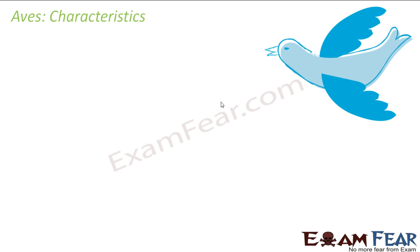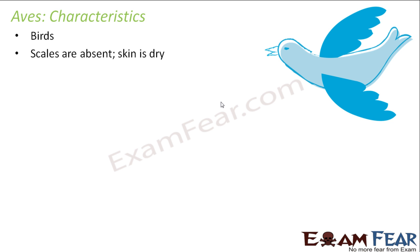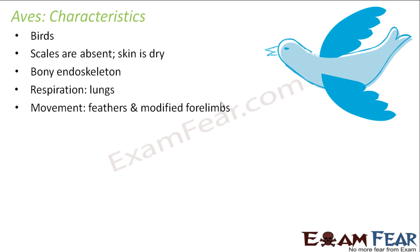Let us look at the next category — Aves, that is birds. The limbs are present but in a modified form as feathers. Scales are absent and the skin is dry, unlike reptiles and amphibians where the skin was moist. They have a bony endoskeleton, meaning the internal skeleton is made up of bones. Respiration happens through lungs. Movement is with the help of feathers and modified forelimbs, which help in flying. They are warm-blooded — these are the first animals capable of regulating their own body temperature, similar to human beings.